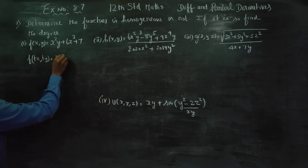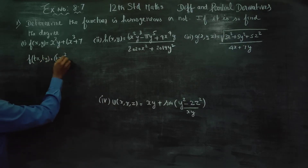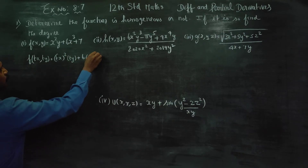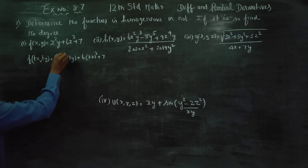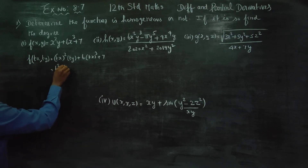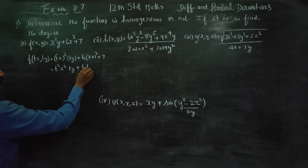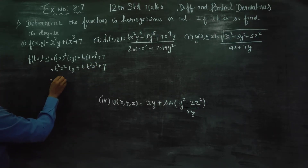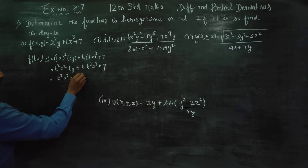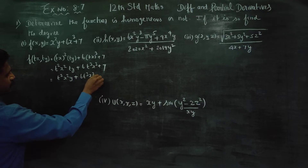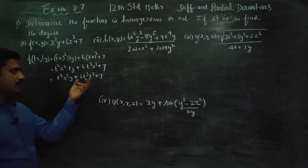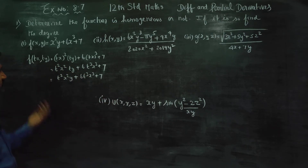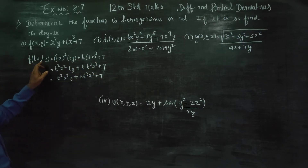Substitute x squared, then tx squared; y, then ty. Plus 6x cubed, then tx cubed, plus 7. This gives t squared x squared times ty plus 6t cubed x cubed plus 7. This is the value after substitution.